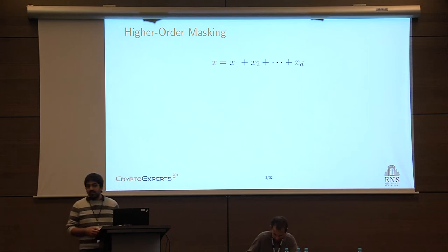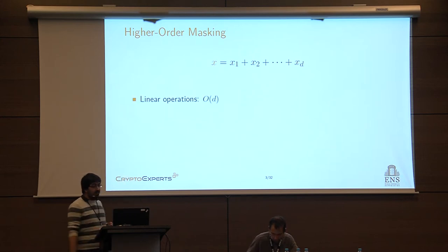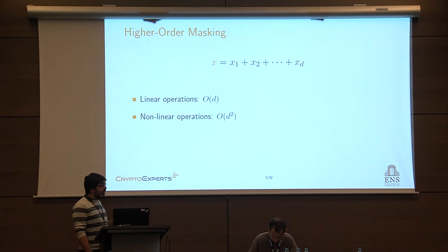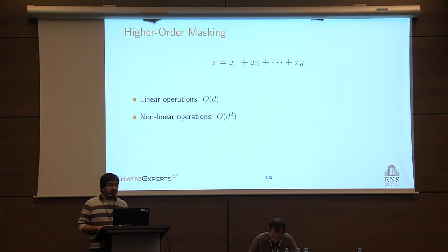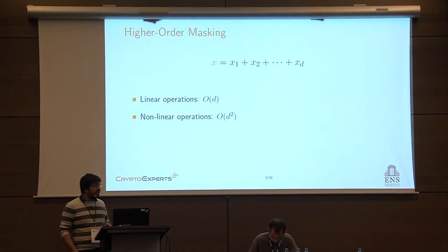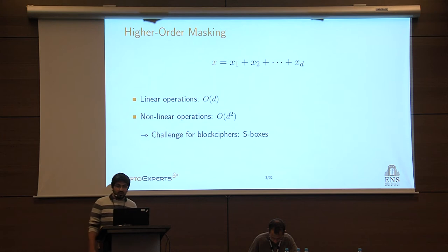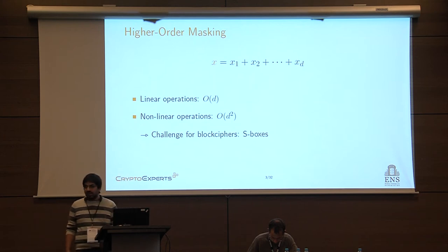In the presence of masked variables, how do we perform operations? Linear operations are linear in the masking order, whereas non-linear operations are quadratic in the masking order. Therefore, the main challenge when you want to protect a block cipher with higher-order masking is to efficiently compute the non-linear part of those block ciphers, namely to efficiently compute the S-boxes. By efficiently, it means finding a representation of the S-box such that you have a minimal number of calls to non-linear operations.